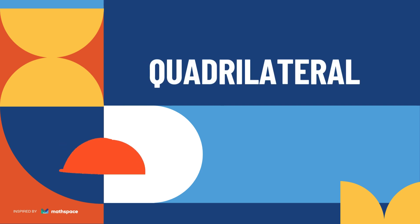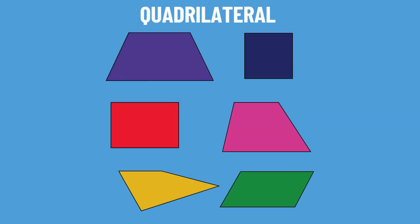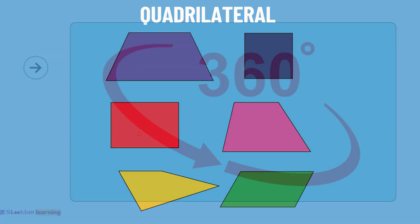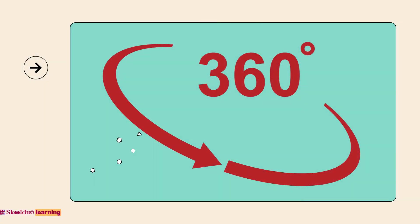Quadrilaterals are types of polygon with four straight lines joining together at their ends. They are classified as two-dimensional shapes. The total sum of angles in a quadrilateral is equal to 360 degrees. Some quadrilaterals are made up of a pair of parallel lines, while some don't.